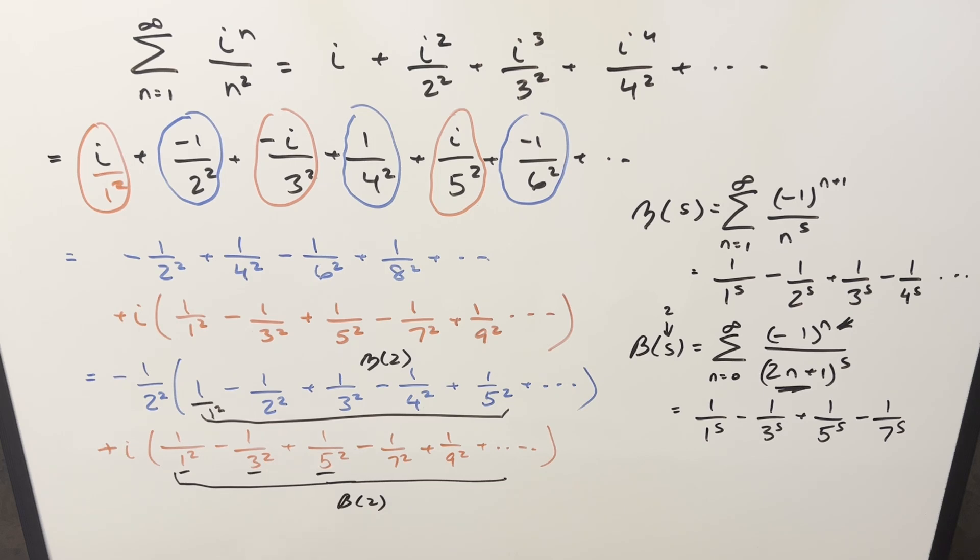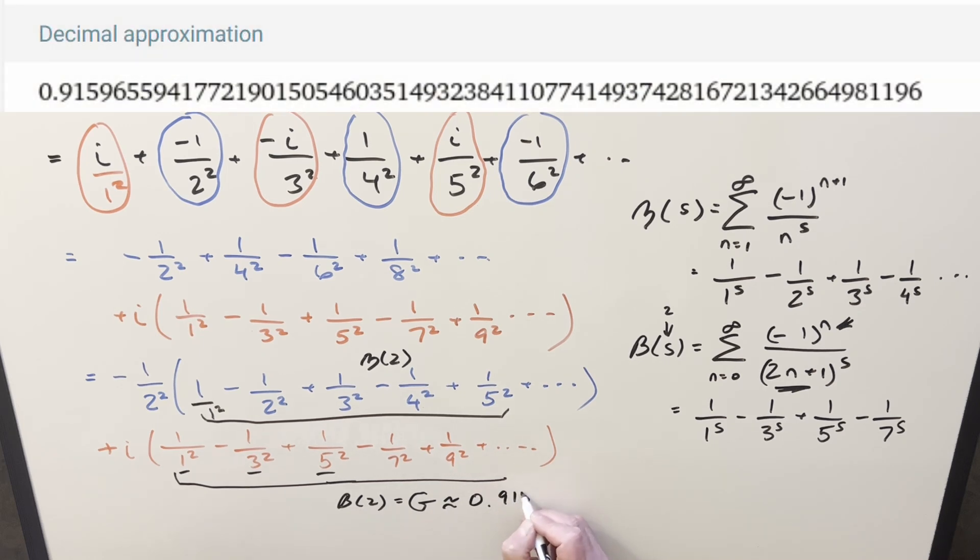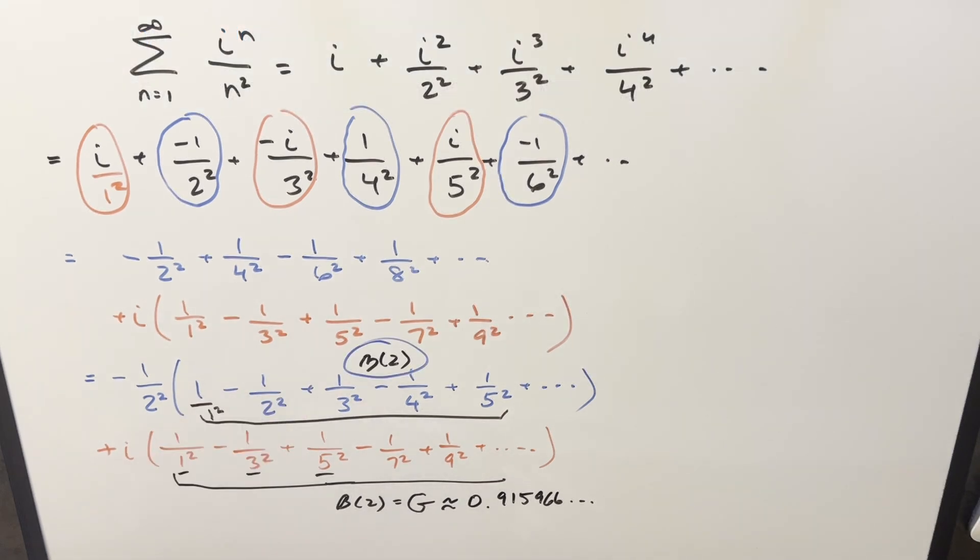So in order to finish this off, it's just a matter of can we express this a nicer way. Well, for this beta 2 value, this is the same thing as Catalan's constant. We can write this as a G, a big G. This numeric value is something like 0.915966, something like that.